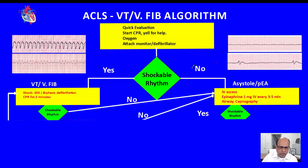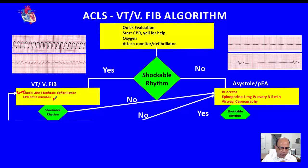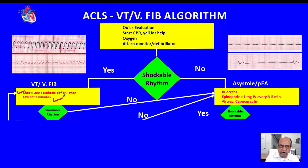Once we have identified a shockable rhythm, our next step is to immediately deliver a 200-joule biphasic shock. Right after the shock, we continue CPR for two more minutes without any interruption. In the meantime, the other assistants will be attending to the airway, oxygen, and checking the pulse.